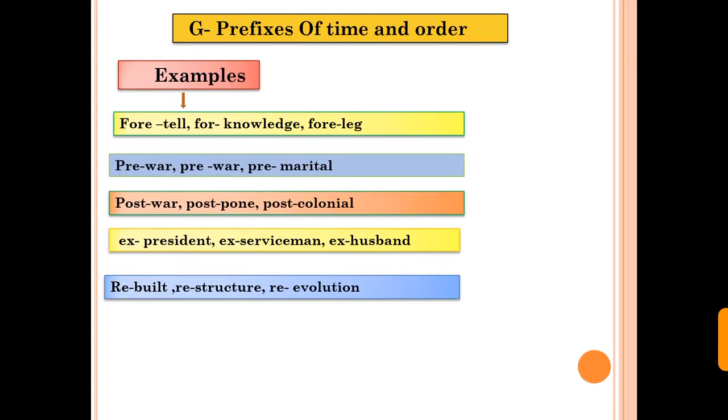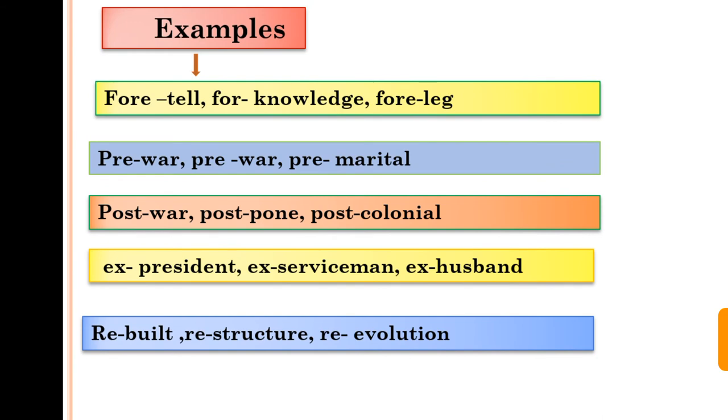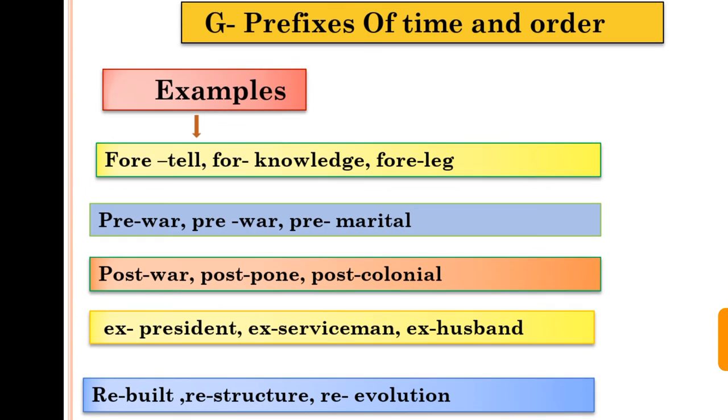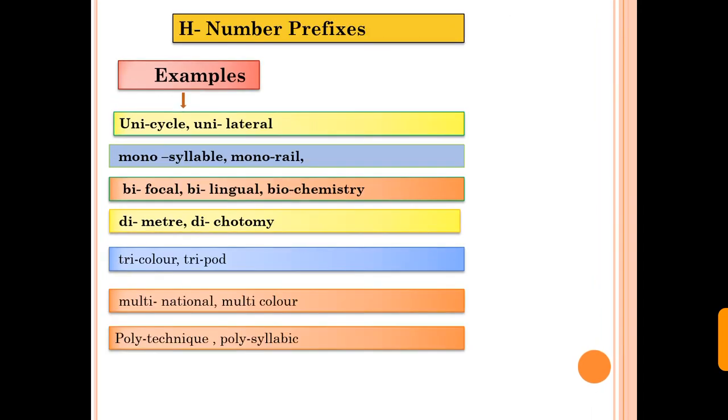The prefixes of time and order is another type. These are fore, pre, post, ex, re. Here are some examples: foretail, foreknowledge, foreleg. War, prewar, marital, premarital. Another example of post: war, postwar, dawn, postdawn. President, ex-president, serviceman, ex-serviceman. Rebuild, restructure. These are the time or order prefixes list.